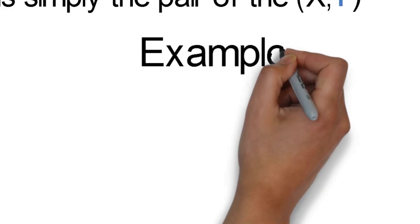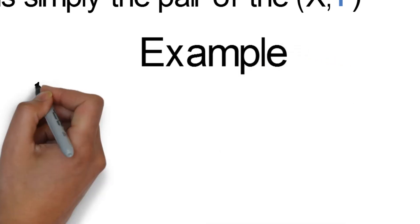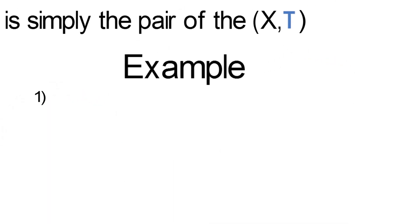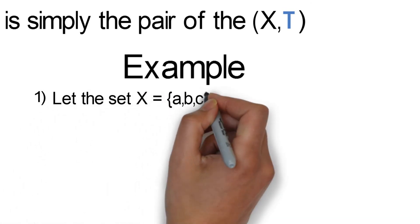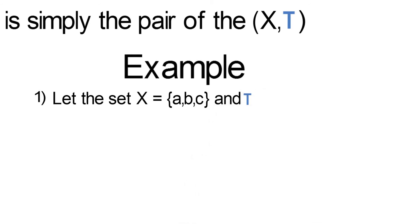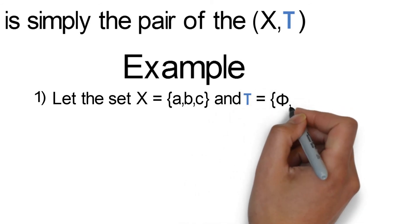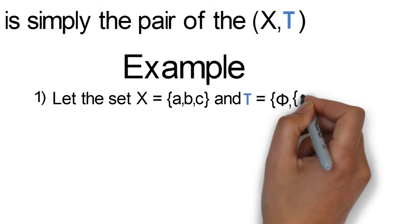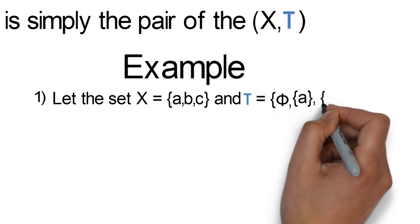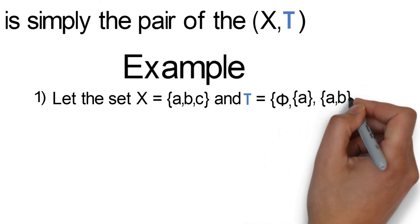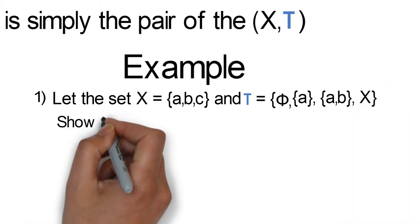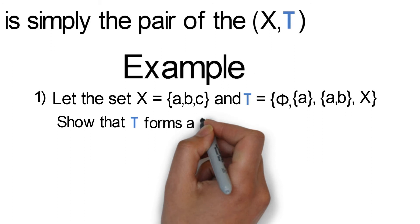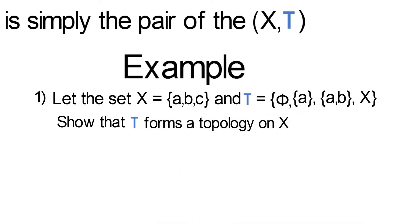Example 1: Let the set X contain elements a, b, c and tau contain the empty set, the singleton set {a}, the set {a,b}, and the set X. Now show that tau forms a topology on X.